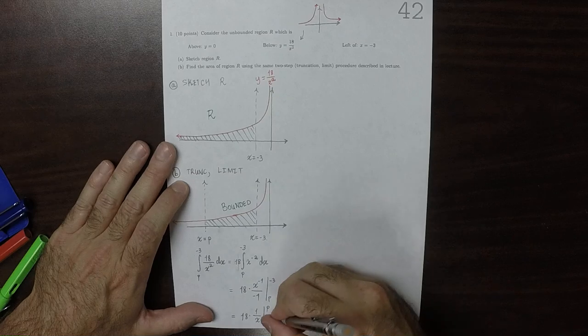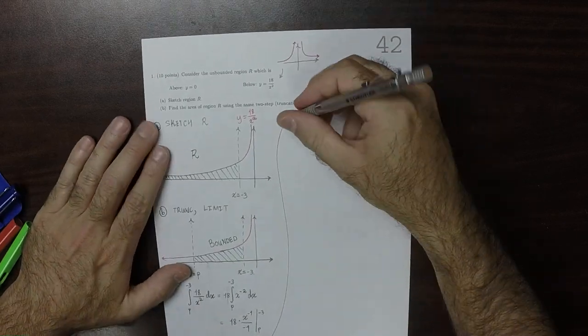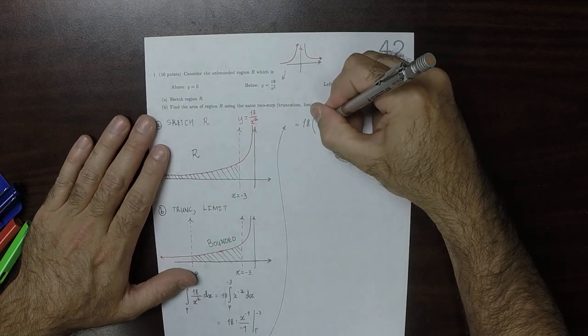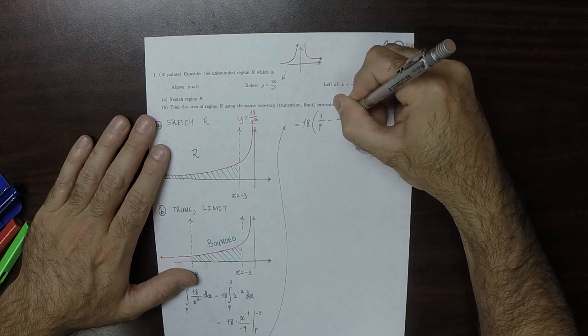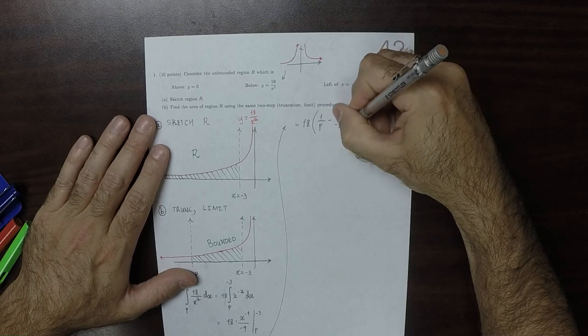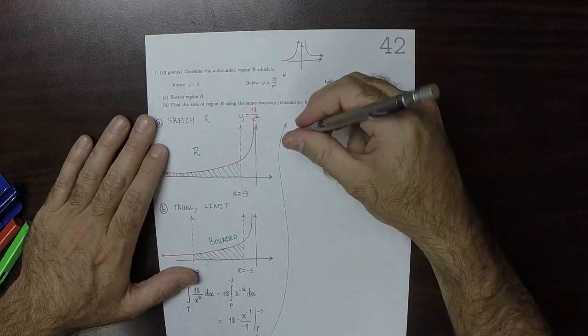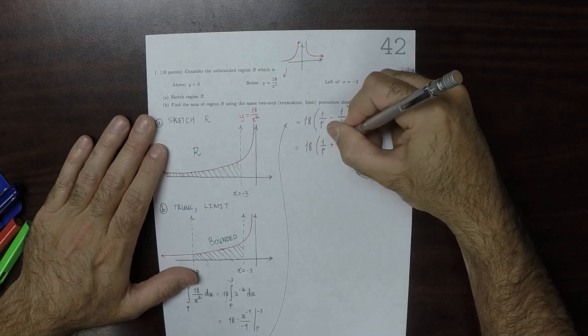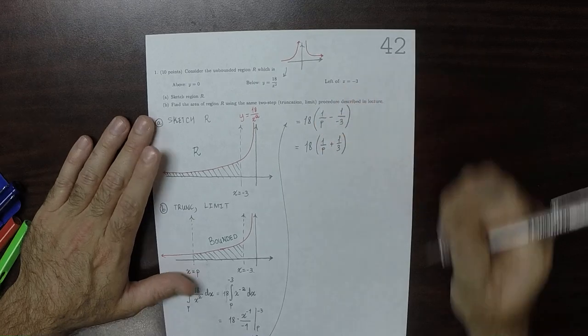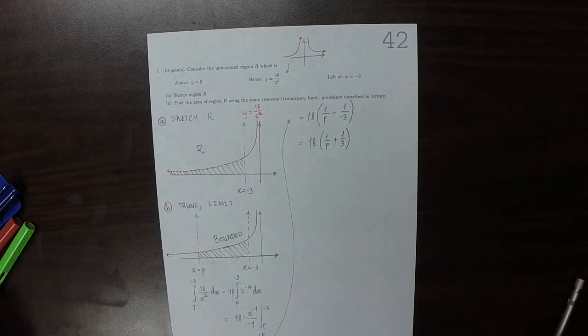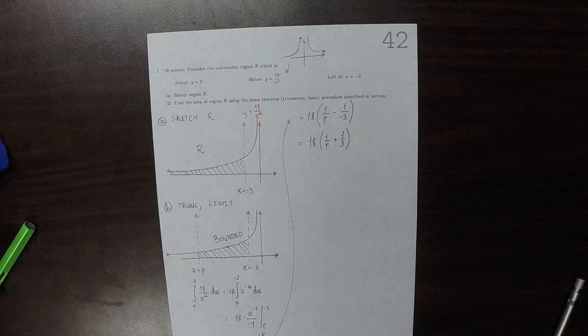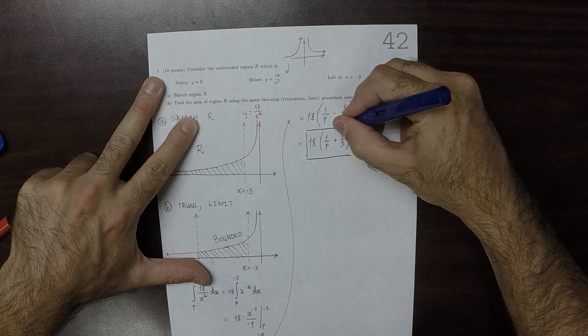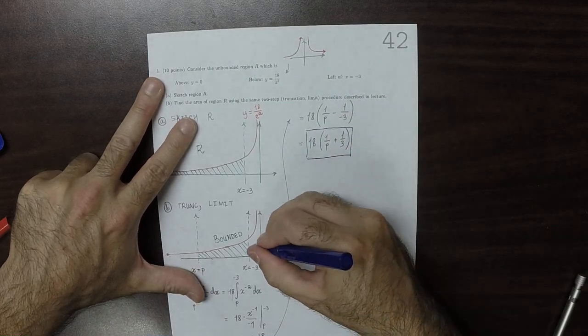So then, continuing that up here. That would be 18 and then multiplied by 1 over P minus 1 over negative 3. So that would be 18 times 1 over P plus 1 over 3. So this expression right here is the area of this region.